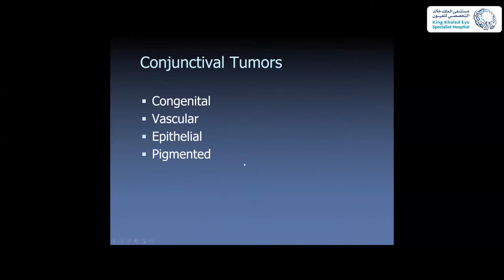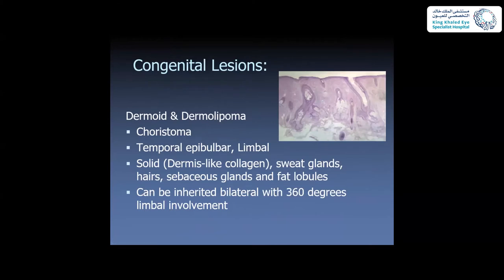Conjunctival tumors can be classified into congenital, vascular, epithelial, and pigmented. The congenital ones are choristomas, which include dermoid or dermolipoma. Location-wise, they are usually in the temporal epibulbar or limbal region. They consist of dermis-like collagen as well as accessories such as sweat glands, hair, sebaceous glands, and fat lobules, as seen in histopathology specimens. This can also be inherited.